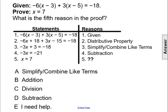Given the information that negative 6 times the quantity of x minus 3 plus 3 times the quantity of x minus 5 equals negative 18, and that we're trying to prove that x equals 7, what is the fifth reason in the proof?